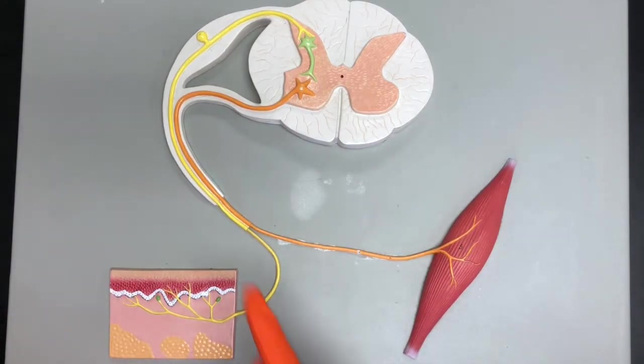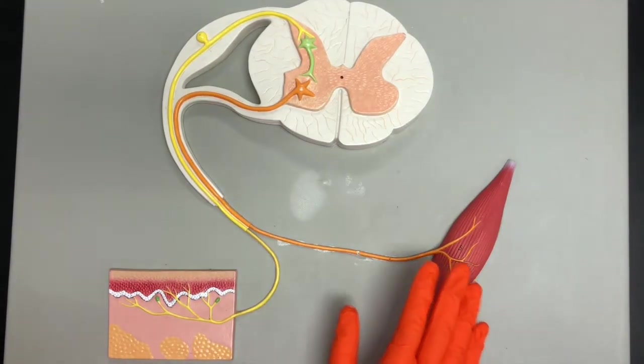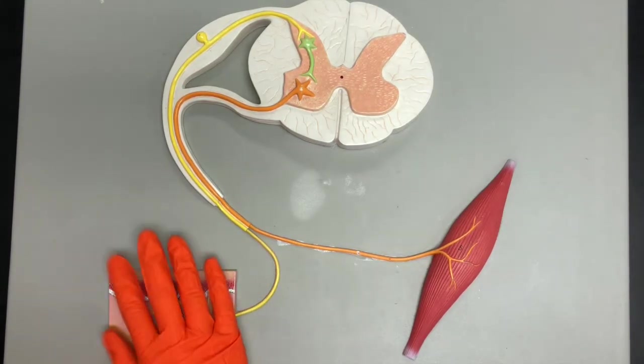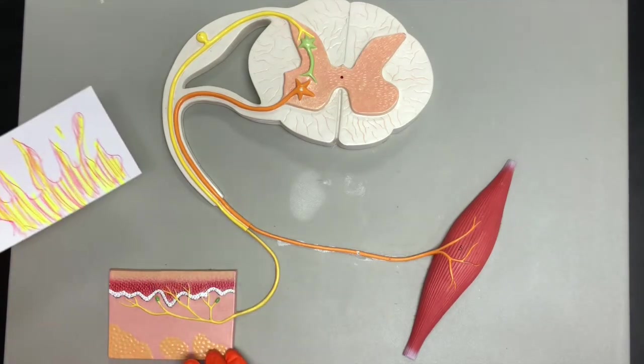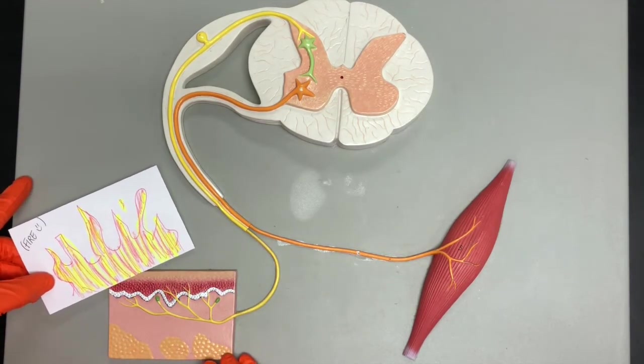So let's look at a specific example to help illustrate how all of these tie together. We'll look at something called a withdrawal reflex. Let's pretend that this is skin in the hand and your hand comes in contact with some fire.